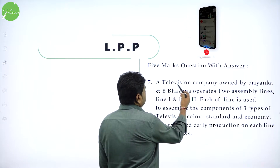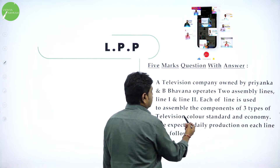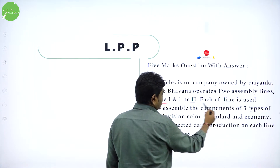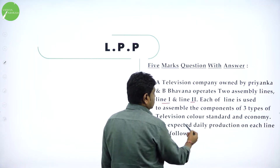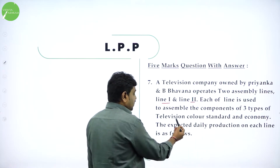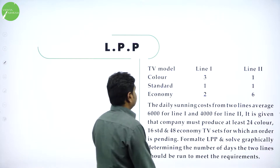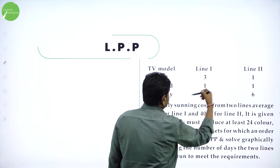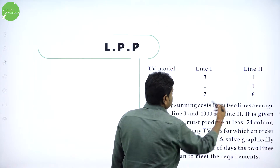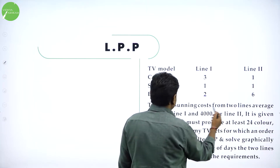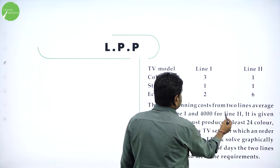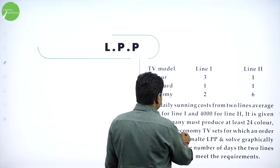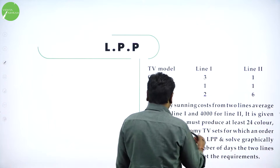A television company owned by Priyanka and Bhavana operates two assembly lines: Line 1 and Line 2. Each line is used to assemble the components of three types of television: color, standard, and economy. The expected daily production of each line is as follows — color: Line 1 gives 3, Line 2 gives 1; standard: Line 1 gives 1, Line 2 gives 1; economy: Line 1 gives 2, Line 2 gives 6. Daily running costs average 6,000 for Line 1 and 4,000 for Line 2. The company must produce at least 24 color, 16 standard, and 48 economy TV sets for which an order is pending.